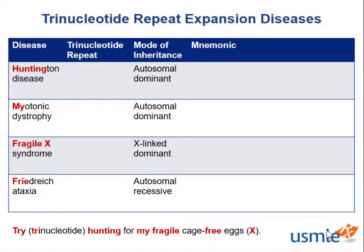Each disease has a characteristic trinucleotide repeat. For Huntington's disease, it's C-A-G, which we can remember with the mnemonic 'caudate has decreased acetylcholine and GABA.' This helps us remember C-A-G, but also that the caudate, part of the striatum of the basal ganglia, atrophies in Huntington disease, and there is decreased acetylcholine and GABA.